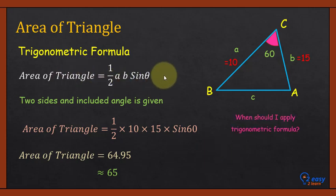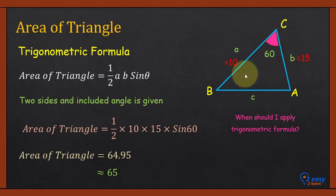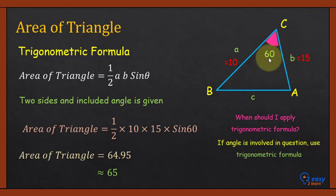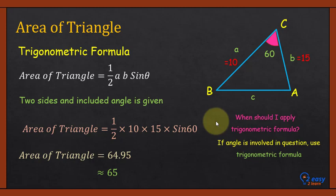How do you identify when to apply the trigonometric formula? This is the most important question. If the angle is involved — meaning an angle is given or needs to be found — then use the trigonometric formula: 1/2 × A × B × sine θ. If no angle is involved, then use the geometrical formula: 1/2 × base × height.